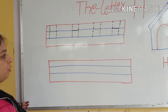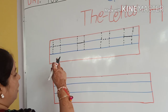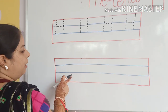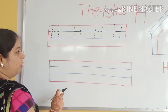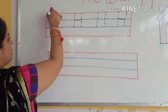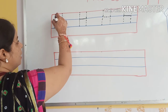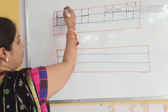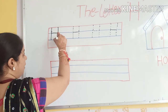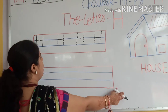Okay kids, look at the board. Trace with me. H. Here we will make H, and here we will make H. First, we make a standing line, red to blue line, then a sleeping line. First blue line, second standing line, red to blue line. H. H for house.